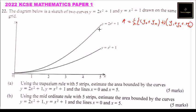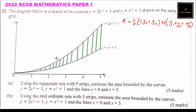The area we are interested in is the area bounded by the two functions. To get this, we take the area bounded by the upper curve y equals 2x squared plus 1, and subtract the area bounded by y equals x squared plus 1. That gives us the required area.